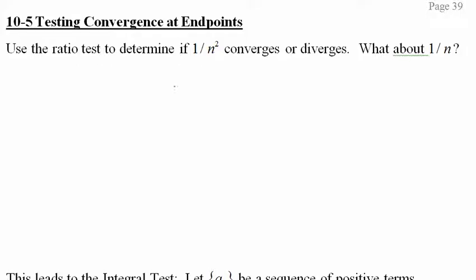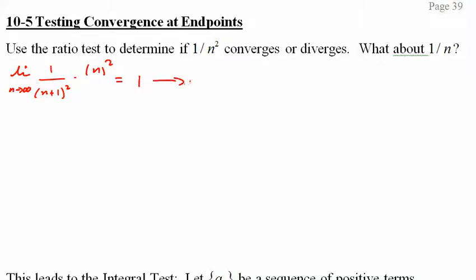First things first: use a ratio test to see if 1/n² converges or diverges. That's the limit as n approaches infinity of 1/(n+1)² times n². The limit equals 1, which is inconclusive. For 1/n, you get the same thing — also inconclusive.